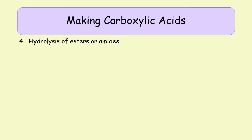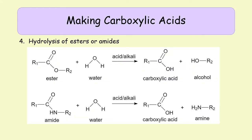Another way of making a carboxylic acid is by breaking a compound apart through hydrolysis. Good examples are hydrolysis of esters or hydrolysis of amides. For esters, the C=O–O ester link is broken by adding water via acid or alkali hydrolysis to regenerate a carboxylic acid and an alcohol. An amide is very similar but has a C=O bonded to an NH group instead. Using the same water with acid or alkali catalyst generates a carboxylic acid and an amine.